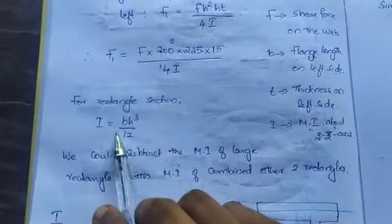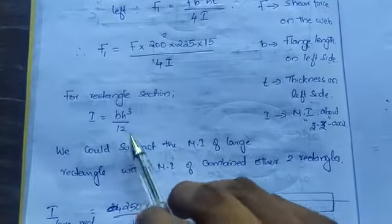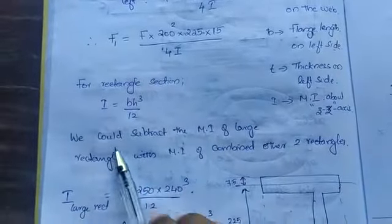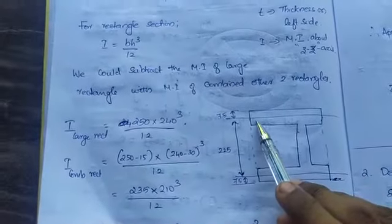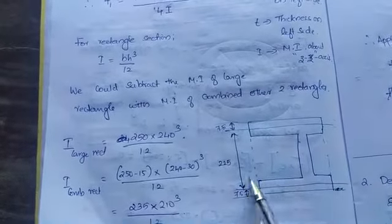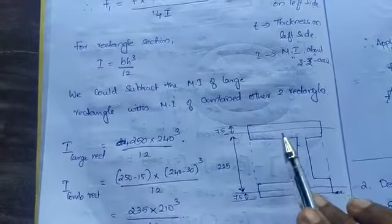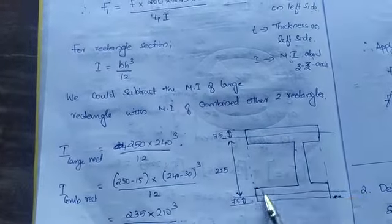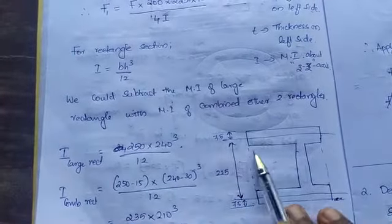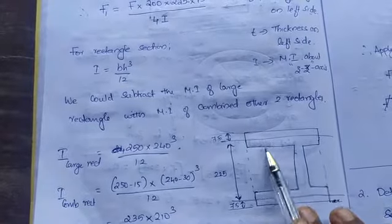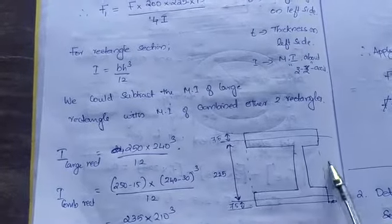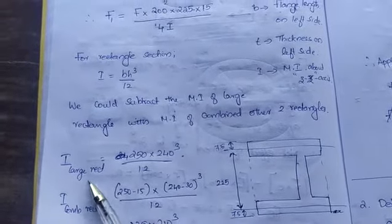For rectangular section, I equals bh³/12. We could subtract the moment of inertia of large rectangle. Consider the whole section inertia - the whole rectangle - and from that you subtract. Large rectangle is 250 total length into 240³/12, and you subtract the combined rectangle.